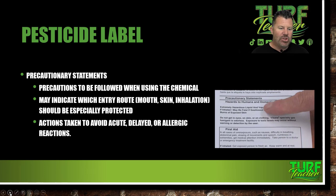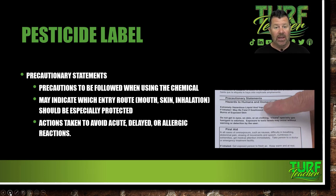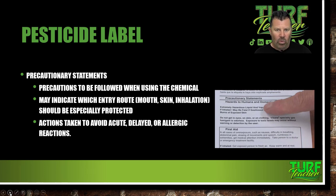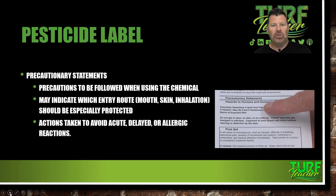Precautionary statements: these are precautions that need to be followed when using the chemical. They may indicate which entry route — the mouth, skin, or inhalation — should be especially protected. Your eyes: I don't want to ever lose my eyesight because of something stupid I did with a pesticide. Take the extra precaution. If it says use goggles, use goggles. They're saying it for a reason.